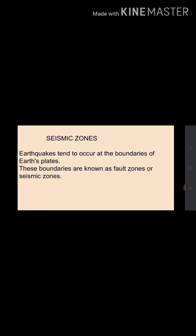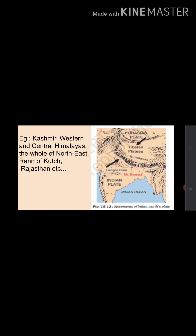The boundaries of the plates are the weak zones where earthquakes are more likely to occur. In India, some areas are seismic or fault zones — for example, Kashmir, western and central Himalayas, the whole of the northeast, Rann of Kutch, Rajasthan, etc. These zones are weak areas where earthquakes are more likely to occur.